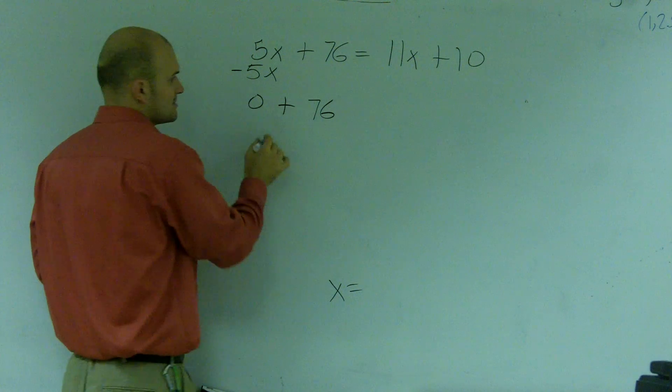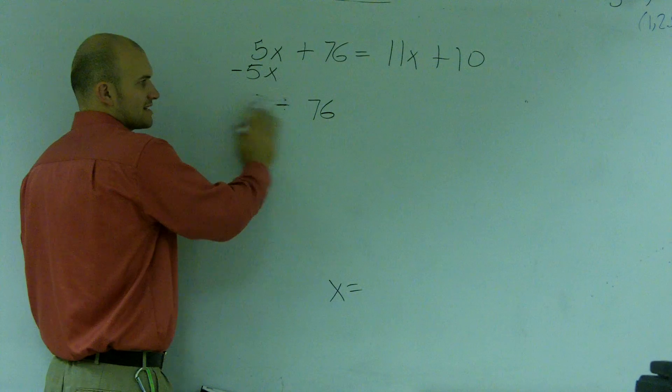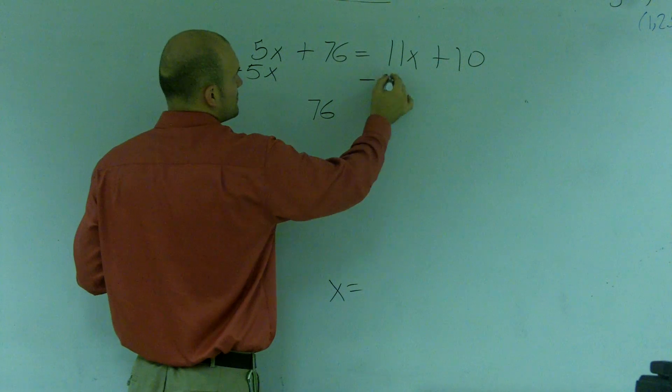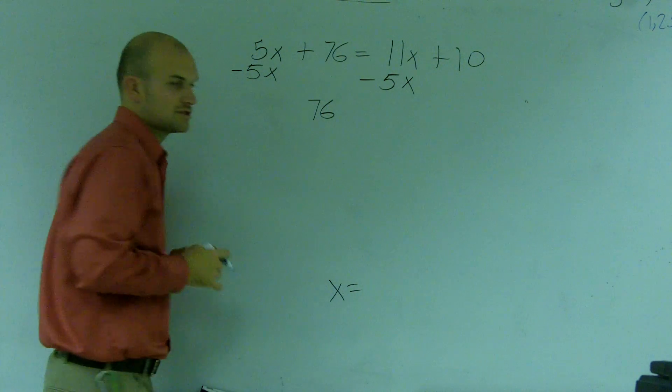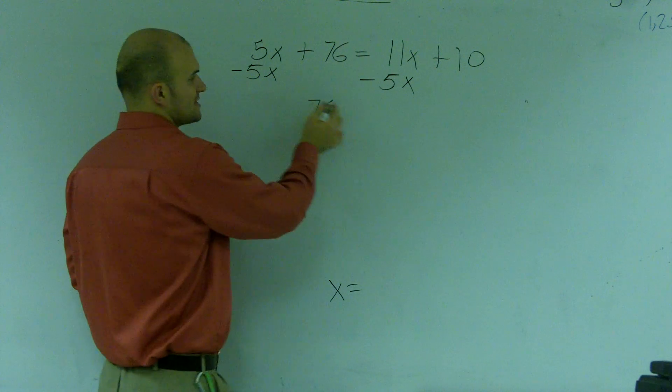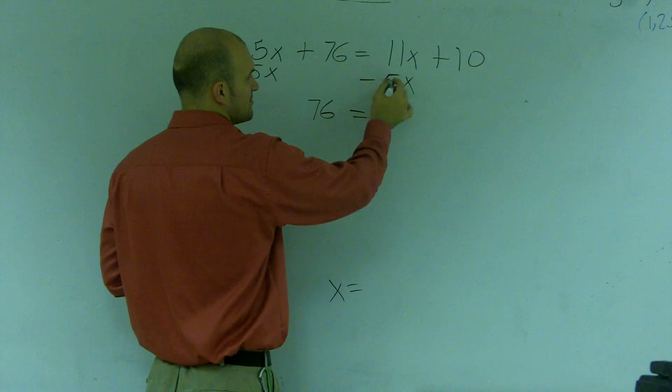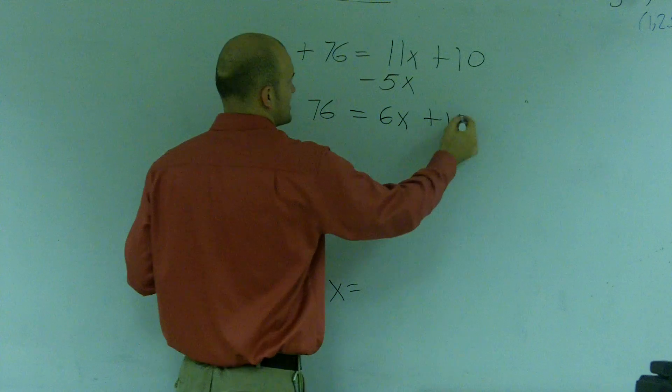Right? 0 plus 76 is just 76, so we don't write the 0. But whenever you subtract on one side, you have to subtract on the other side. So I have 76 equals 11x minus 5x is 6x plus 10.